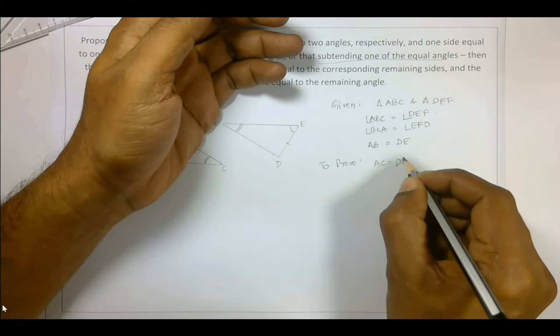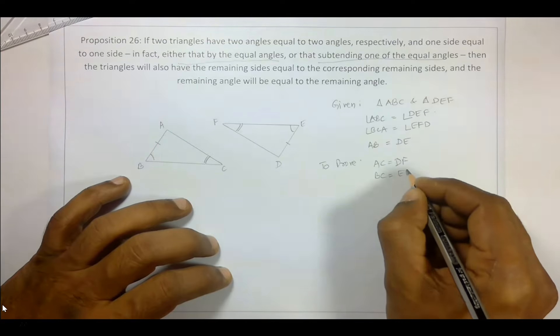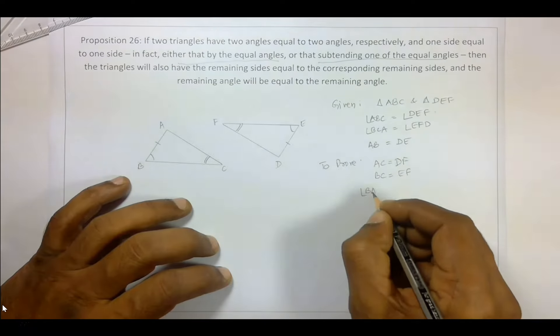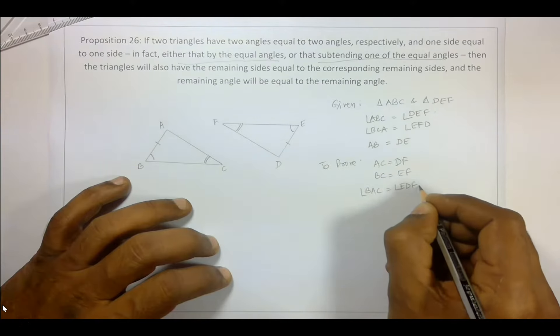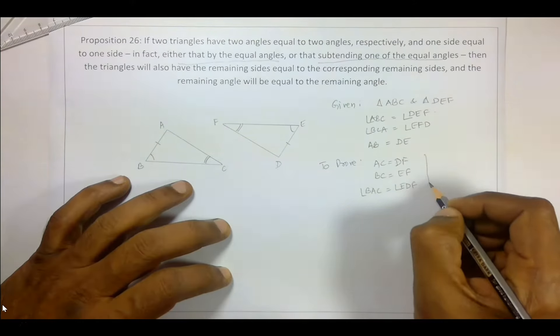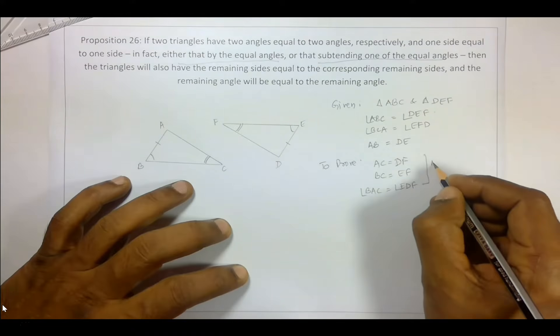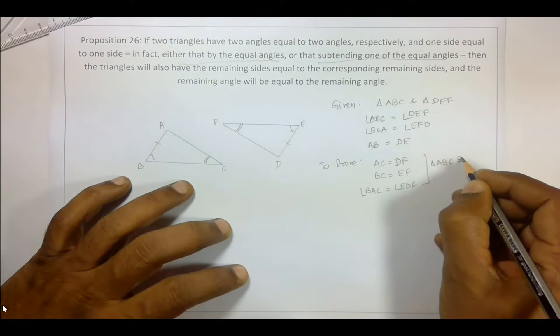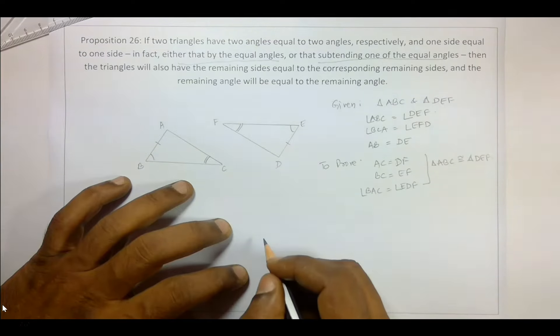We have to prove that AC is equal to DF, BC is equal to EF, and angle BAC is equal to angle EDF. Or in other words, triangle ABC is congruent to triangle DEF. This is what we have to prove.